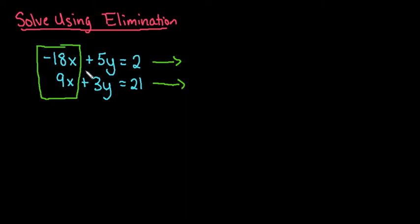Once I've decided which variable I'm going to eliminate, I need to figure out what I have to do to get them to be opposites of each other. The top one is going to stay the same, because the negative 18x, I don't have to do anything to it to get it to be negative, nor do I have to multiply the top one.